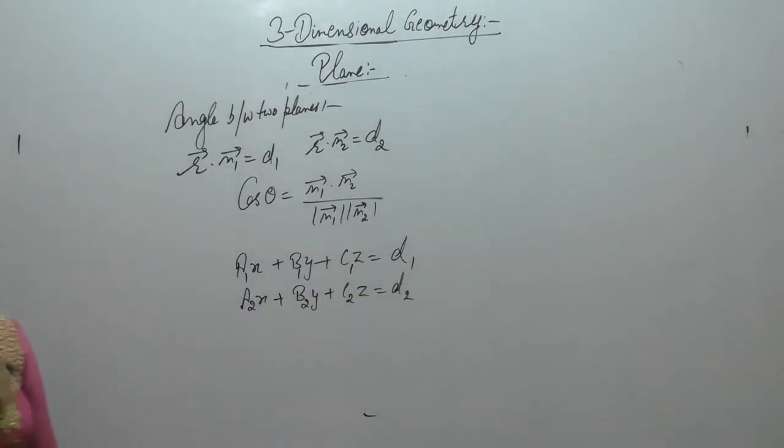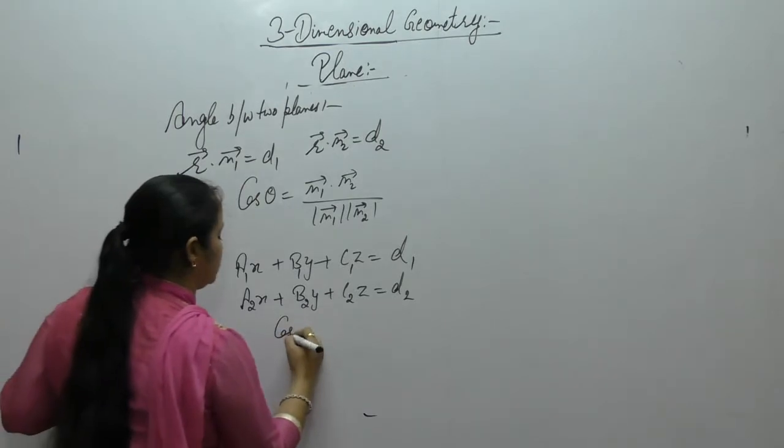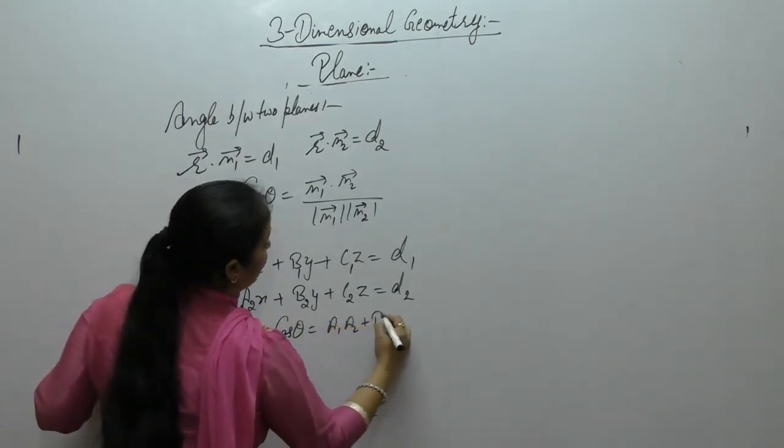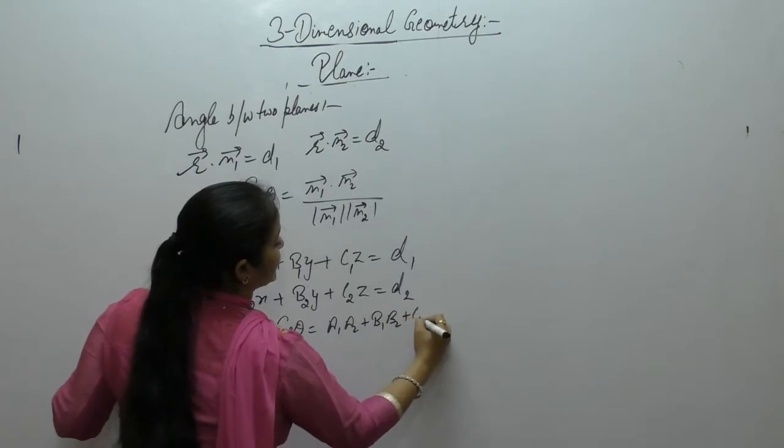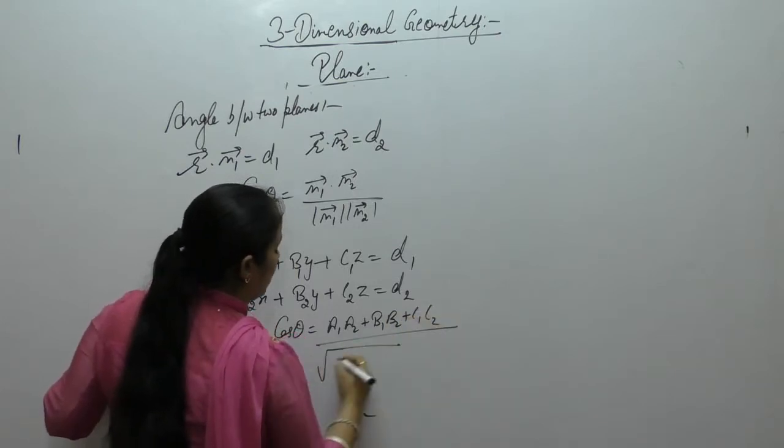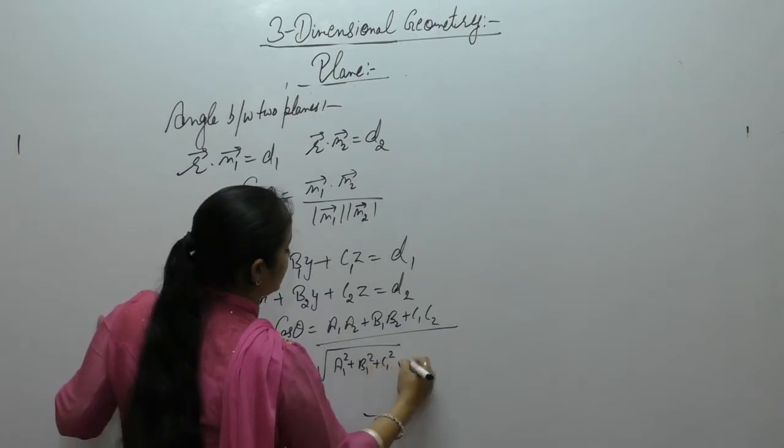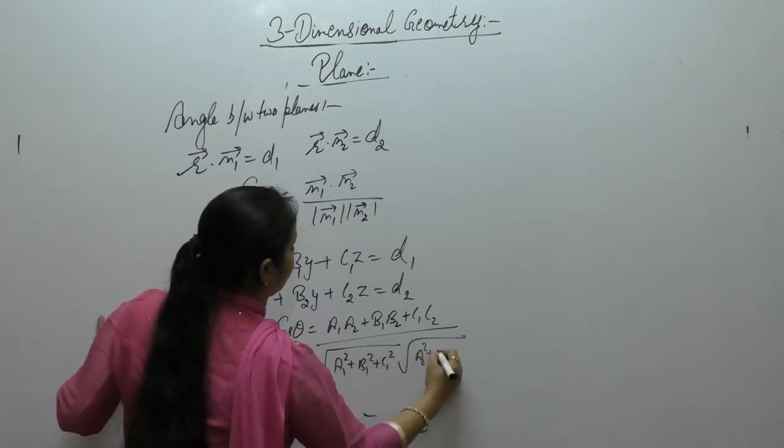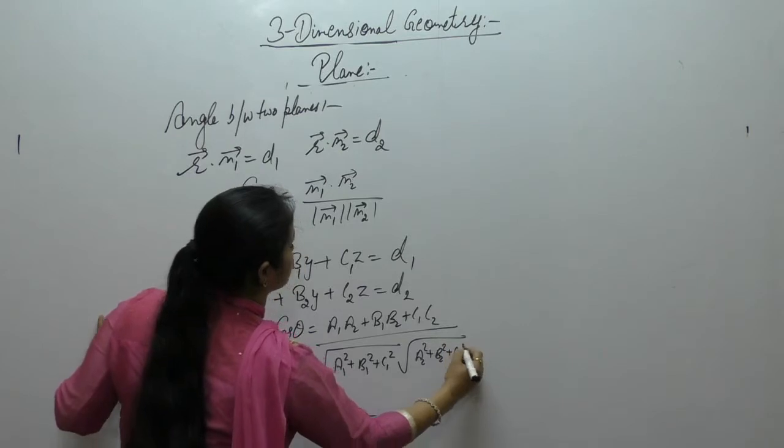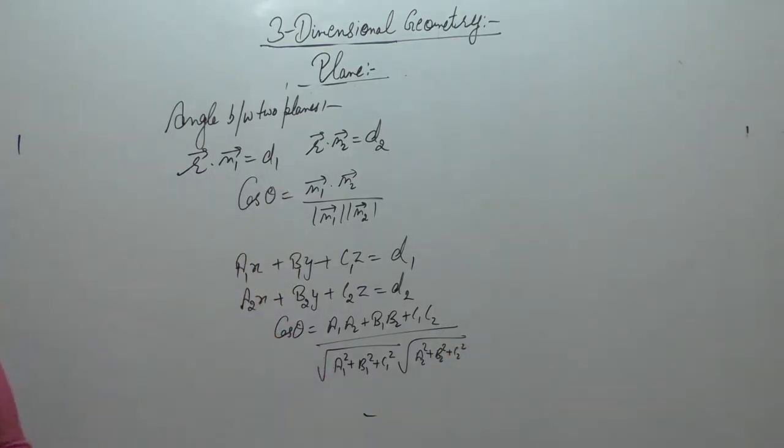And if we have two planes equations given, a2x plus b2y plus c2z is equal to d2, then angle is equal to a1a2 plus b1b2 plus c1c2 upon square root of a1 square, b1 square, c1 square, a2 square, b2 square and c2 square. So to find angle between two planes.